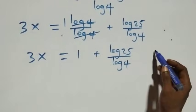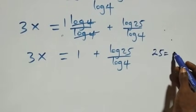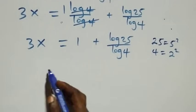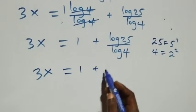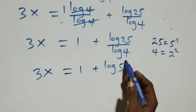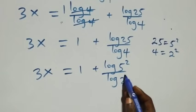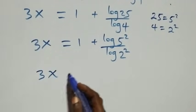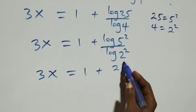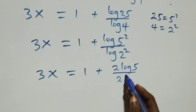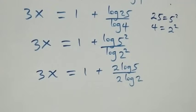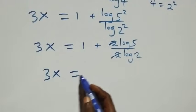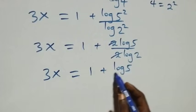The next step: 25 can be written as 5 times 5, which is 5 squared, and 4 as 2 times 2, which is 2 squared. Applying the log power rule, the exponents come down, giving us 3x equals to 1 plus 2 log 5 over 2 log 2. The 2s cancel, so 3x equals to 1 plus log 5 over log 2.